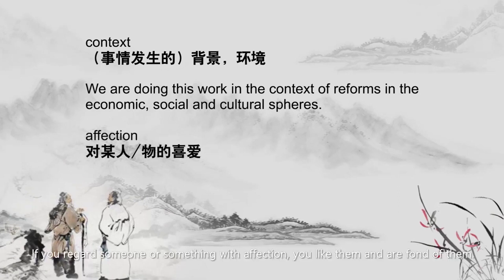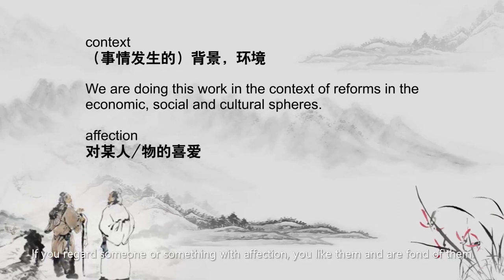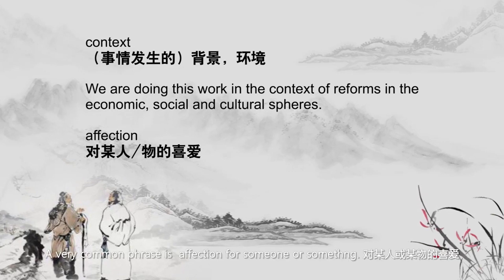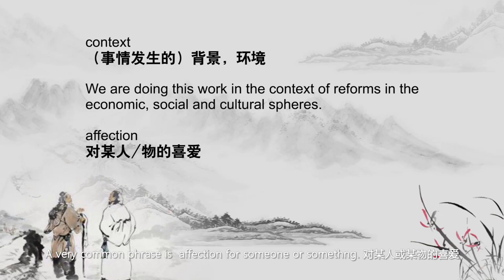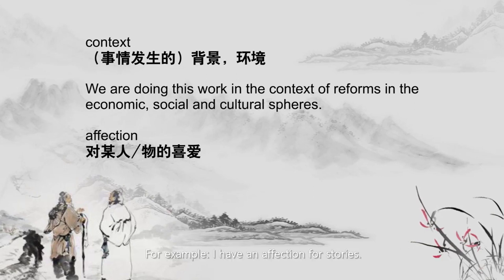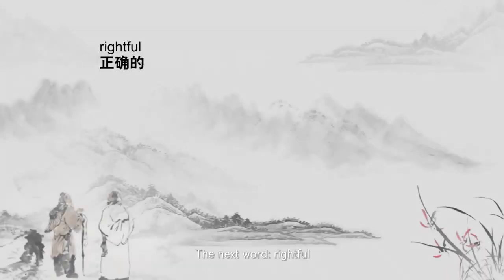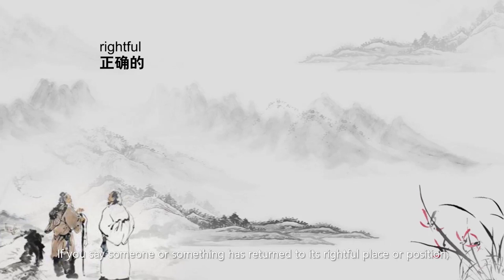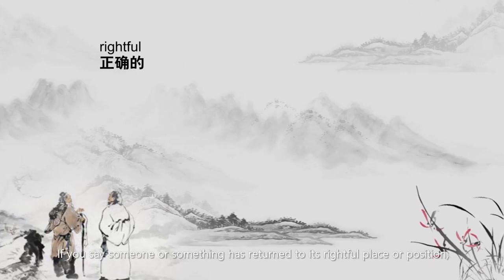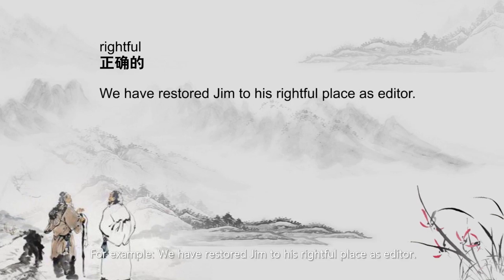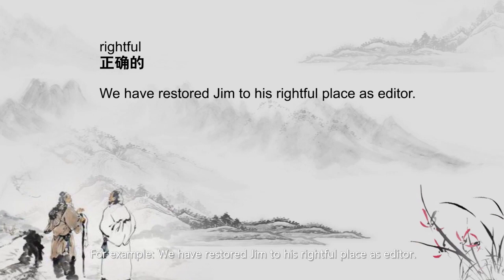'Affection' — if you regard someone or something with affection, you like them and are fond of them. It is a noun, and the common phrase is 'affection for someone or something'. For example: I have an affection for stories. 'Rightful' — if you say someone or something has returned to its rightful place or position, they have returned to the place or position that you think they should have. For example: we have restored Jim to his rightful place as editor.